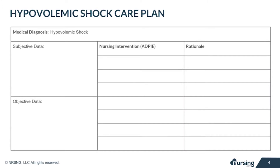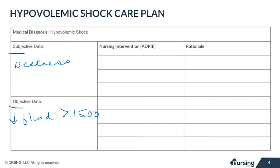Let's take a look at some of the subjective and objective data that your patient with hypovolemic shock may present with. Subjective data are the things based on your patient's opinions or feelings. For hypovolemic shock, this could include weakness, anxiety, restlessness, report of vomiting, diarrhea, or rectal or vaginal bleeding.